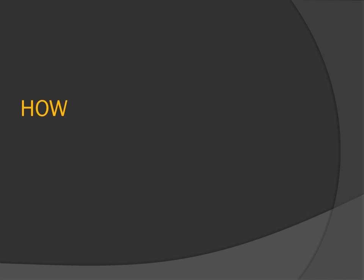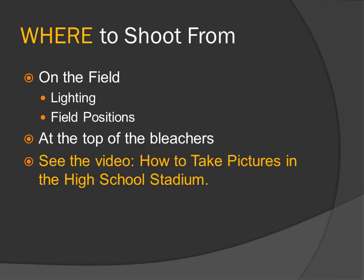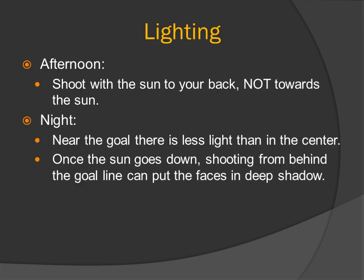Where to shoot from: on the field and at the top of the bleachers. Please see the video on how to take pictures in the high school stadium. For lighting, in the afternoon shoot with the sun to your back, not towards the sun. At night, near the goal there is less light than in the center, and shooting from behind the goal line can put faces in deep shadow.